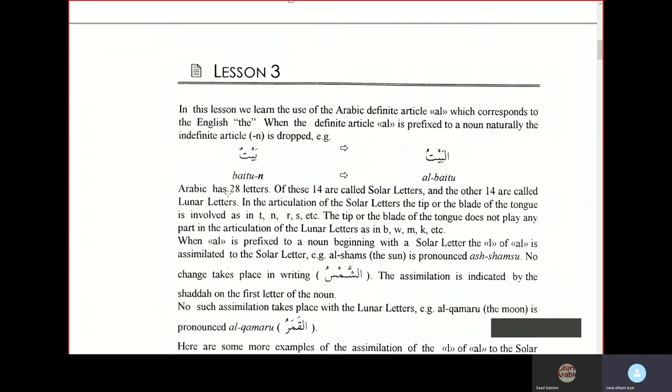The tip of the blade of the tongue does not play any part in the articulation of the lunar letters, as in ba, va, ma, ka, etc.